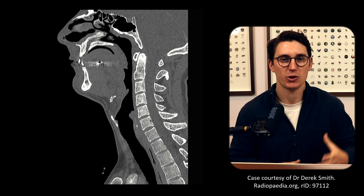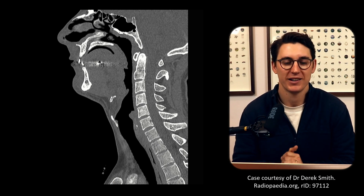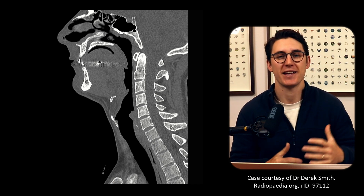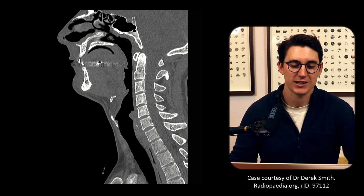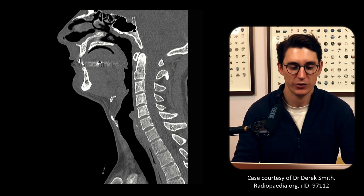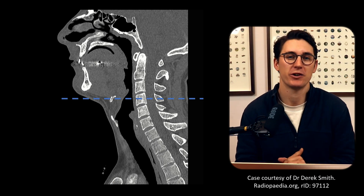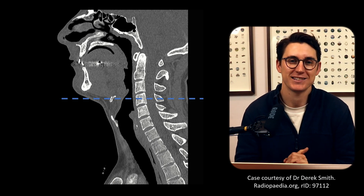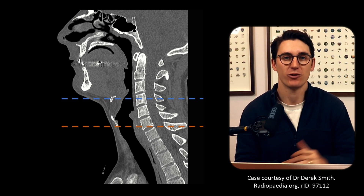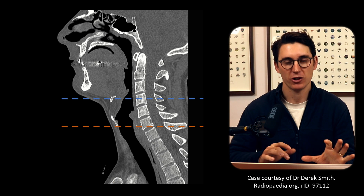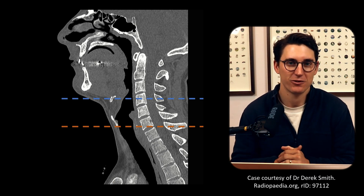Once you compartmentalize the neck it becomes much easier to identify the anatomy as well as knowing what is normal and what is abnormal. The first thing we need to do is separate the neck into a suprahyoid and an infrahyoid neck. If you look at this sagittal CT scan, we draw a line through the hyoid bone. Anything above that line is the suprahyoid neck, anything below is the infrahyoid neck. We're going to start by looking at the infrahyoid neck on a still image and show you the different components of the deep cervical fascia.